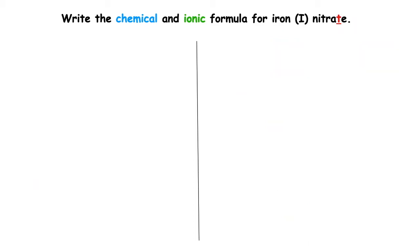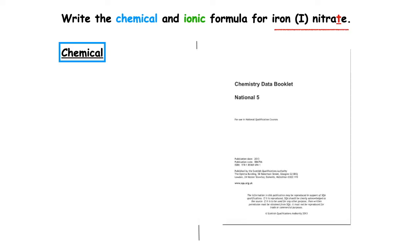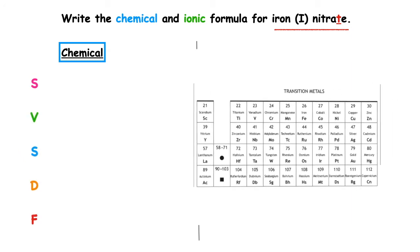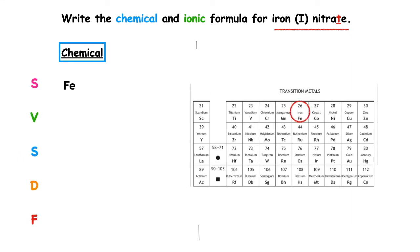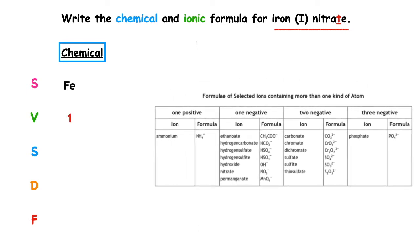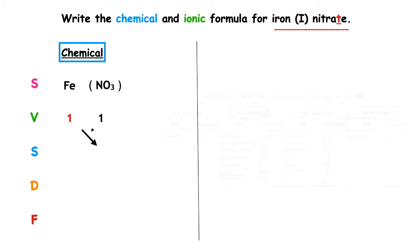This next example is a little bit tricky. We want to write the chemical and ionic formula for iron I nitrate. It ends in -ATE. The T stands for triple, so we're going to have to use page eight of our data booklet. We start off with our SVSDF. The chemical symbol for iron is Fe. The valency is one, given by the Roman numeral I. Nitrate from page eight has the symbol NO3 — we need to remember to keep brackets around that — and a valency of one. Swap the valencies over; highest number is one. Therefore the chemical formula is Fe(NO3). Because we only have one nitrate ion, we can remove the brackets.